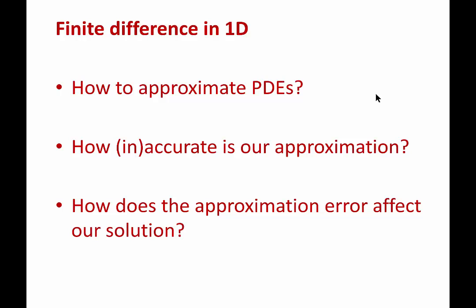And the third question is how does the approximation affect our solution? There is a difference between how much error is in the approximation of the PDE and when you solve it how much error is in the solution. So these are two different things. We're going to look at why they are two different things and how the approximation error affects the solution error. What's the link between them?